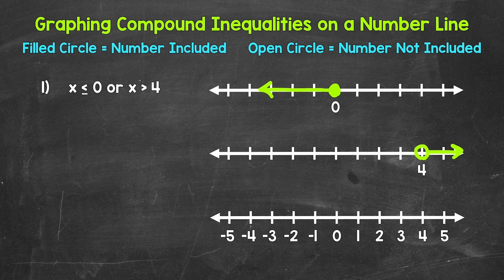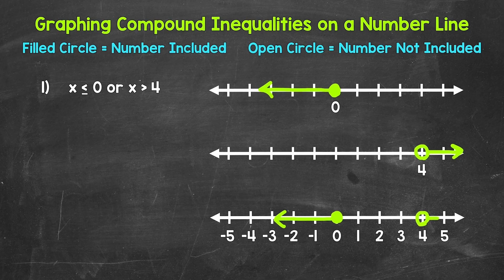Anything greater than four is a solution. Since this is a compound inequality, we need to combine these and graph them on the same number line. We have x is less than or equal to zero, so a filled circle at zero with the arrow going left. And x is greater than four, so an open circle with the arrow going right. This is our graph of the compound inequality representing x is less than or equal to zero, or x is greater than four.